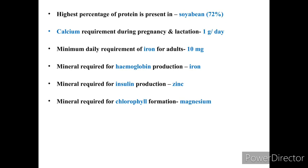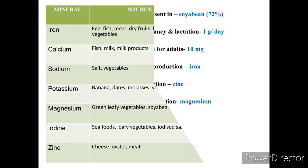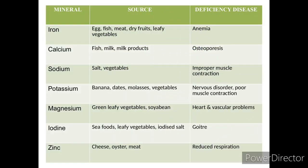To summarize: hemoglobin requires iron; insulin requires zinc; chlorophyll requires magnesium. This is a commonly asked question, so keep it in mind. Now let us discuss some minerals, their sources, and deficiency diseases.